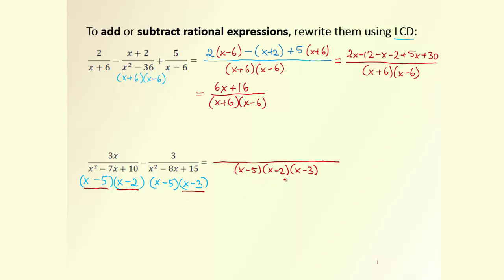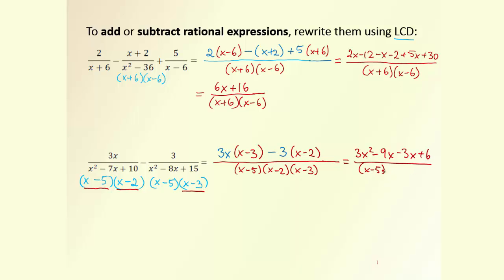When we have our common denominator, let's rewrite the first fraction. We had 3x, and this will be multiplied by the missing bracket (x − 3). The second fraction has −3, and it needs to be multiplied by the missing bracket (x − 2). Now we open all brackets and collect like terms: 3x² − 9x − 3x + 6, over the three brackets.